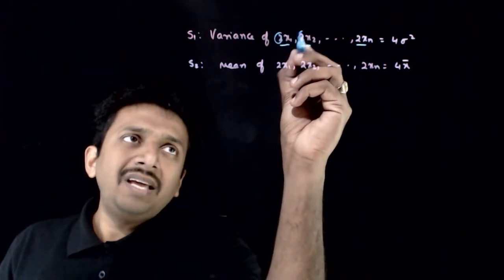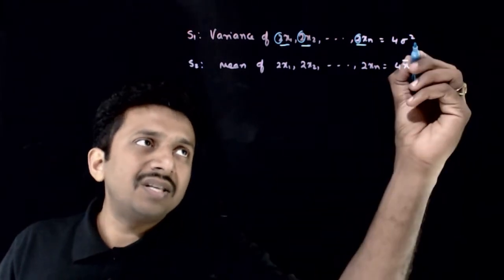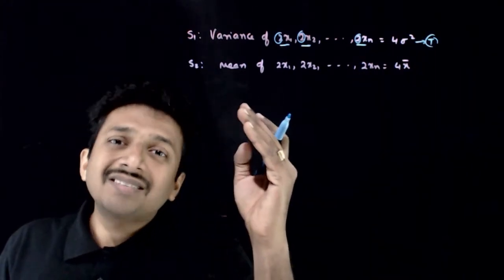So if you multiply each of these readings by 2, obviously the variance increases 4 times. This statement is true, and the mean increases exactly k times.